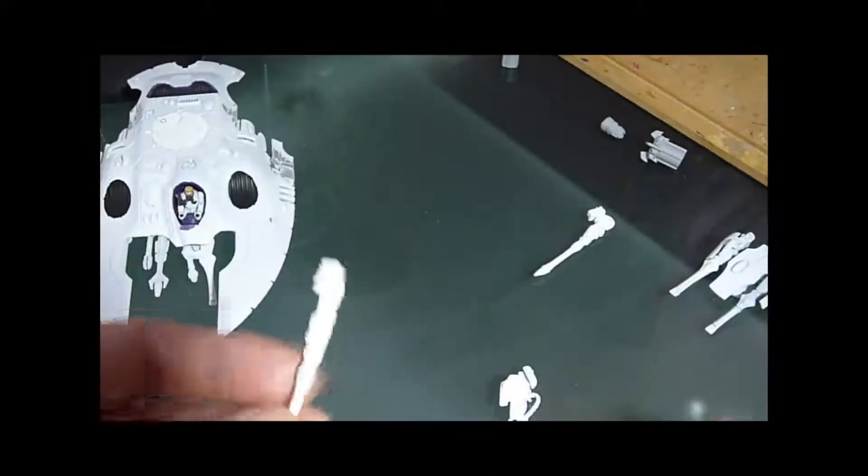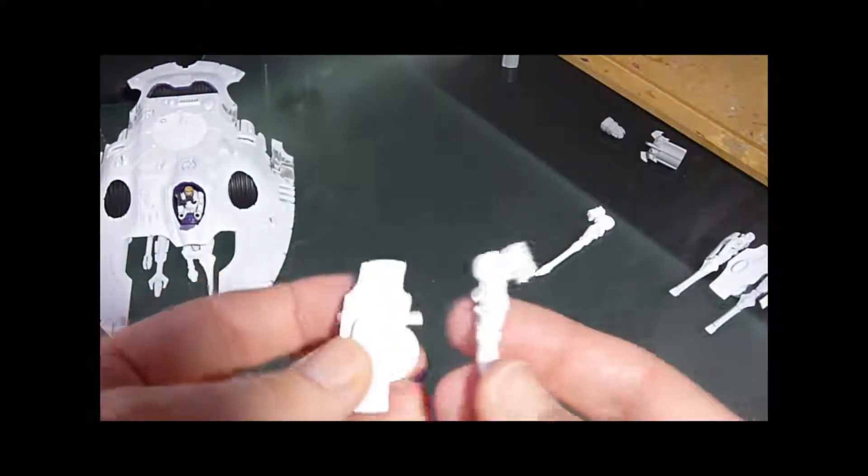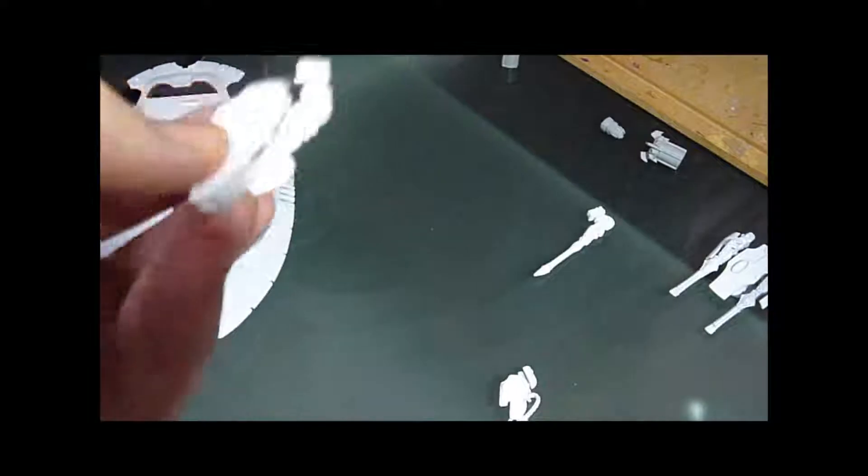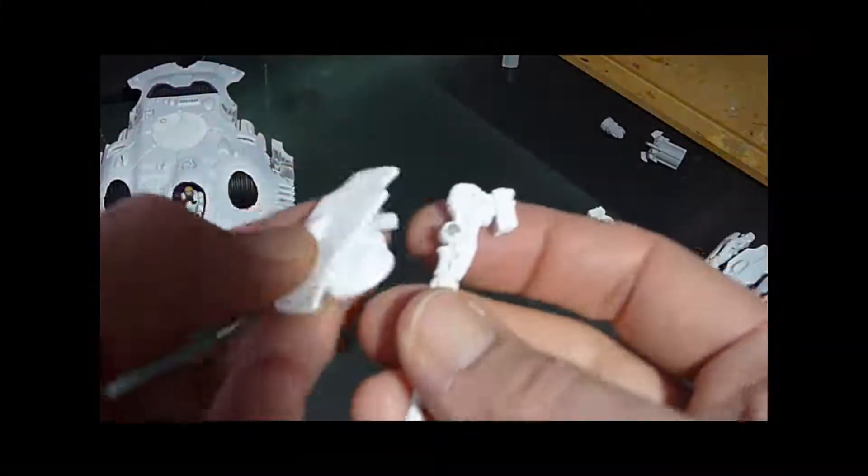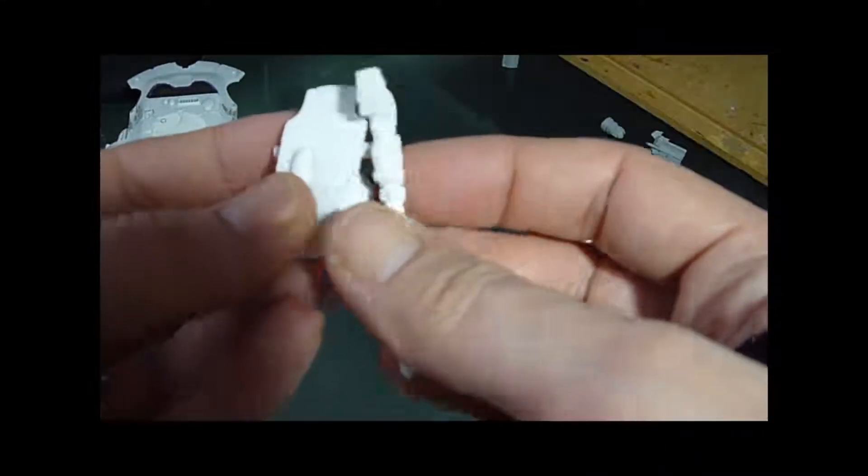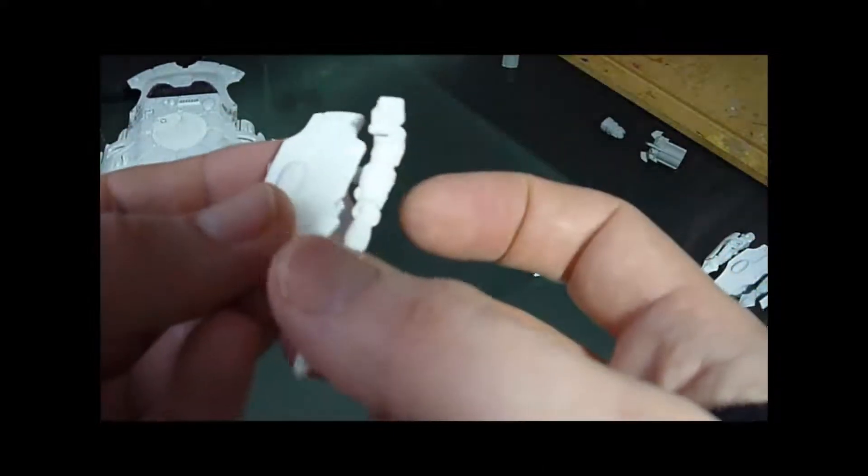Now, what I have found though with these is with the bigger guns like the bright lance, sometimes even with the undercoated paint on, sometimes they do flop down because it's quite a big gun and it's just quite a small magnet area. Even if you have quite a powerful magnet, they do tend to still move.